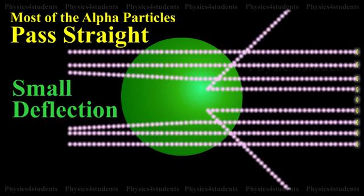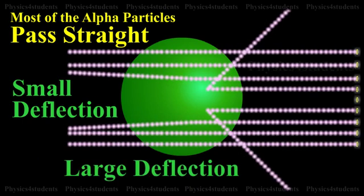Only a small number of particles approach the nucleus of the atom and they were deflected at large angles.